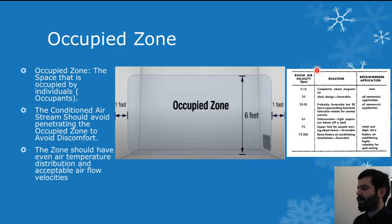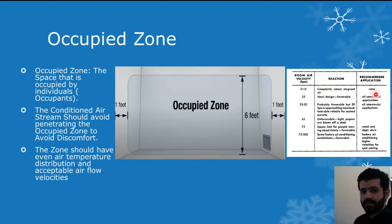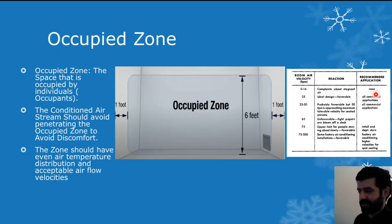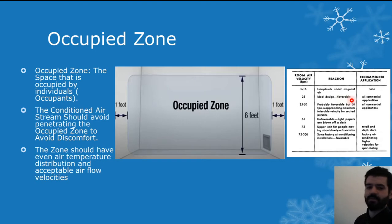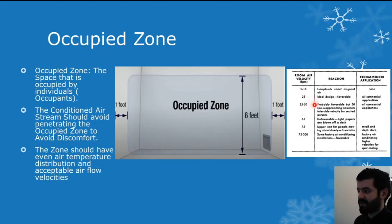For individuals in a space with air velocity of 0 to 16 FPM, there were complaints about stagnant air not moving, with some areas hot and others cold. This velocity range is not recommended for any application. At 25 feet per minute within an occupied space, this is the ideal, favorable design range — all commercial applications should fall within 25 to 50 FPM, which is quite acceptable.